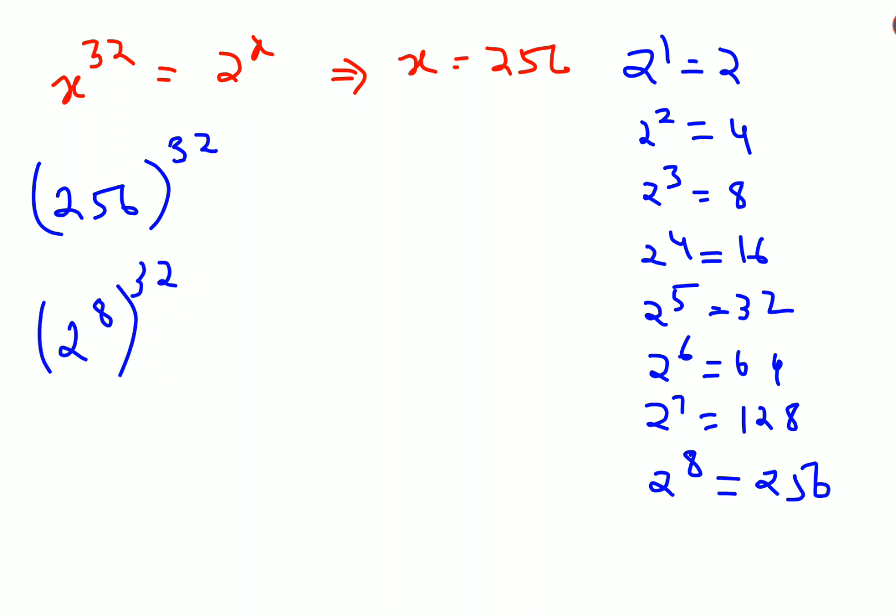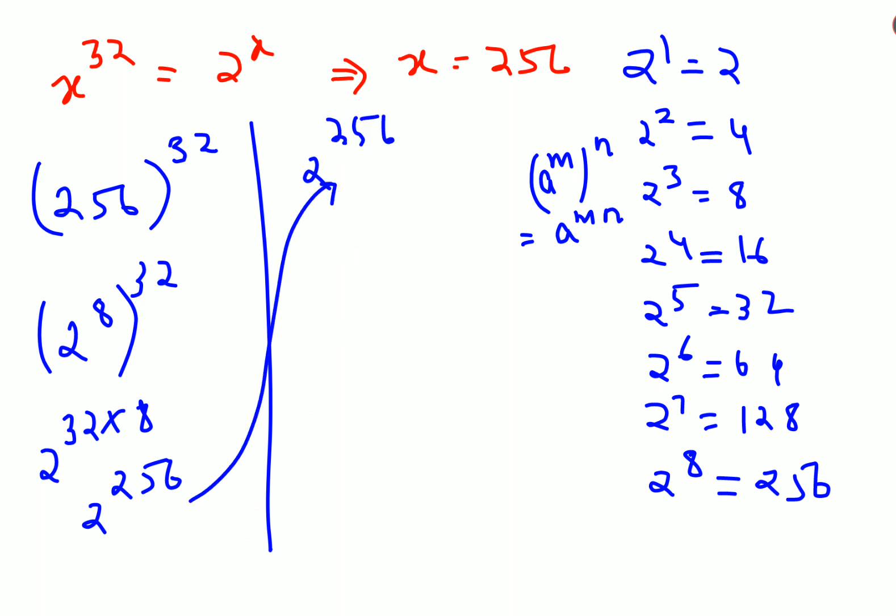Now in indices I know that a raised to m raised to n can be written as a raised to m times n. So this becomes 2 raised to 32 times 8, which comes out to be 2 raised to 256, which was your RHS because 2 raised to x is 2 raised to 256. So this and this is now coming out to be equal.